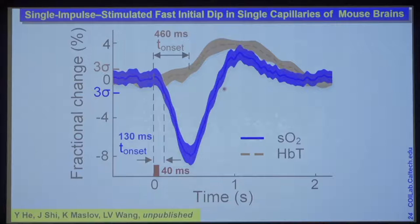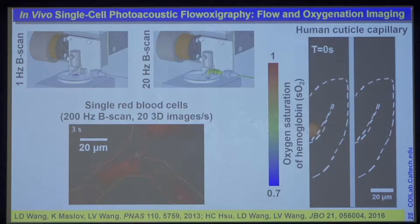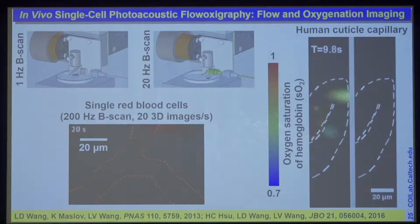To push oxygen saturation to the ultimate limit — the single red blood cell limit — we implemented a very fast microscopic technique working at 200 Hz. It allows us to get real-time images in a small animal; you can see single red blood cells and how they bifurcate. We can also monitor the color of each red blood cell, which allows us to quantify oxygen saturation of hemoglobin. This was done in humans — you can see in our own finger cuticle how red blood cells change color when they release oxygen.